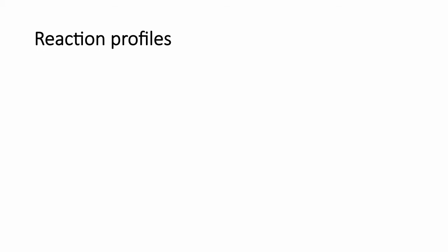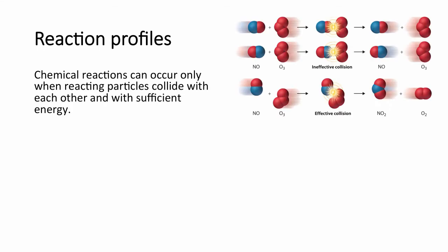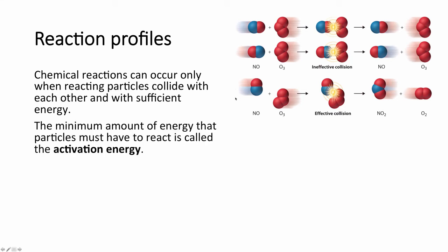Reaction profiles. Chemical reactions can only occur if the reactants collide with each other with sufficient energy. For example, if NO2 reacts with O3 but ever so slowly, then they'll have no reaction. The minimum amount of energy that particles must have to react is called the activation energy. If NO and O3 have the activation energy, this will result in an effective or successful collision, and then a reaction will take place.